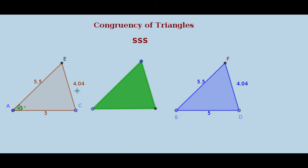That is, one is lying on the other. Then we say that these two triangles are congruent. If the two triangles are congruent, all the six elements of the triangles are equal. The six elements of the triangle are three sides and three angles. Now, let us see the three sides of this triangle. You may observe that the corresponding sides are equal and also the corresponding angles are also equal.